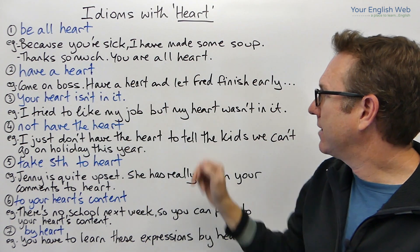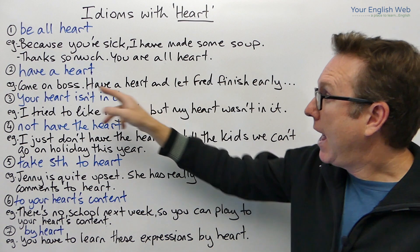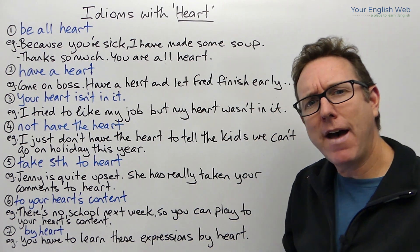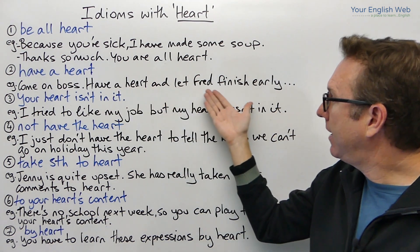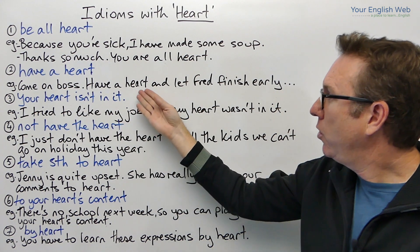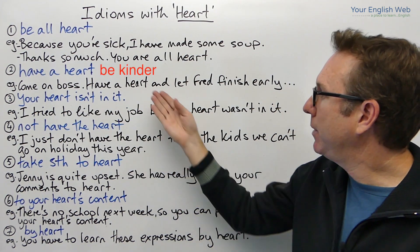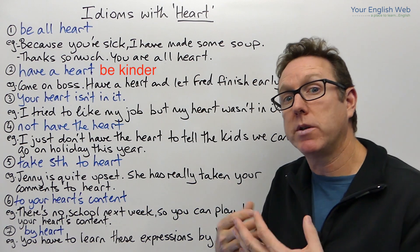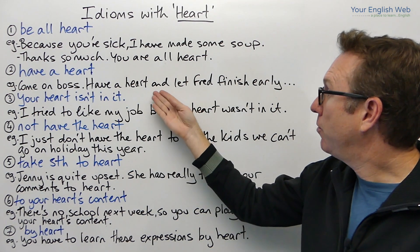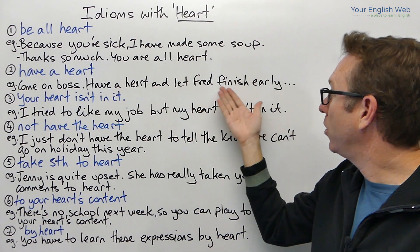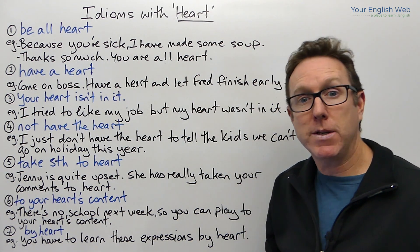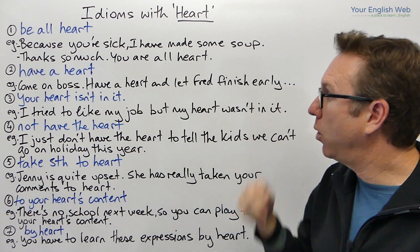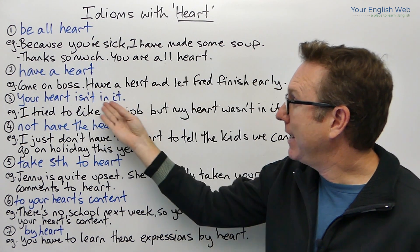The example sentence is: 'Come on boss, have a heart and let Fred finish early.' To have a heart means to be kinder, to show sympathy. Here we're encouraging our boss to show some kindness towards Fred and let him finish early — maybe he's had a busy week, he's tired, he's run down. So we want our boss to have a heart, to be kinder towards Fred.